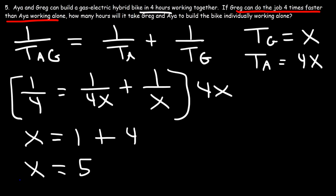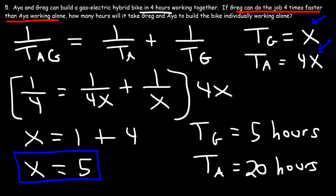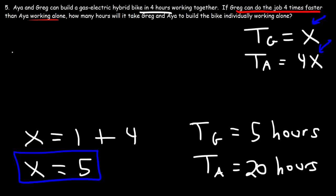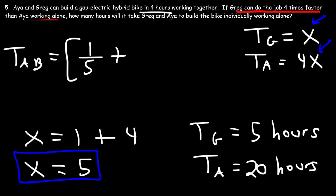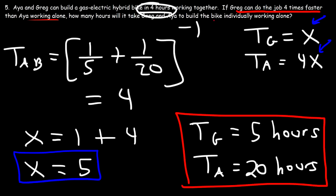Now that we have X equals 5, we plug in: Greg's time equals X equals 5 hours, and Aya's time equals 4X equals 4 times 5 equals 20 hours. You can confirm by calculating (1 over 5 plus 1 over 20) raised to the minus 1 on a scientific calculator, which gives 4 hours — confirming the answer.